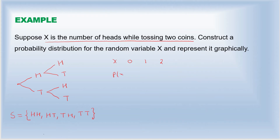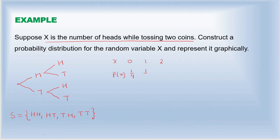The corresponding probabilities are: for 0 heads, there is only one case out of four, so the probability is 1/4. For 1 head, there are two possibilities (head-tail and tail-head) out of four, so the probability is 2/4 or 1/2. For 2 heads, there is only one option (head-head) out of four, so the probability is 1/4.